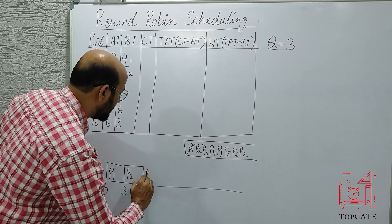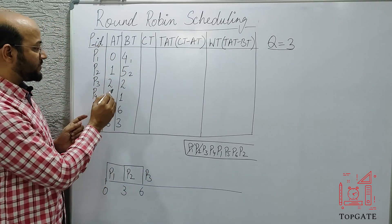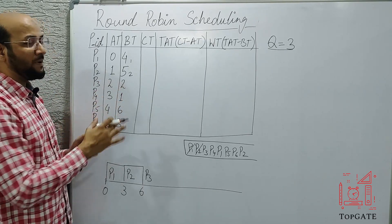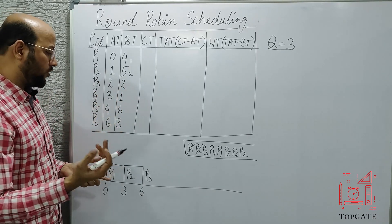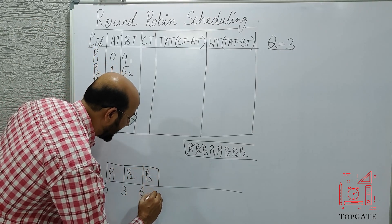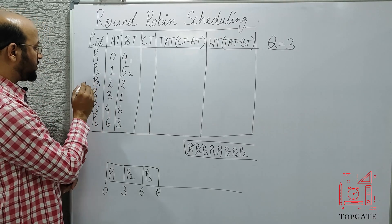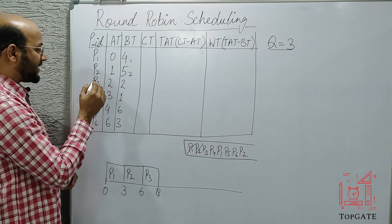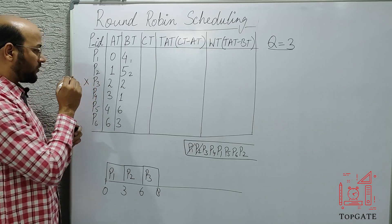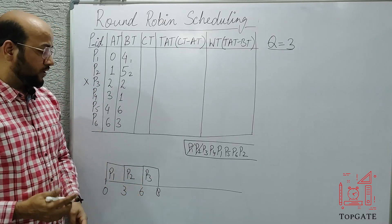Now at the head of the ready queue we have P3. P3's requirement is only two — even though the quantum is three, its requirement is only two. So P3 starts at six and ends at eight. P3 has completed its work; it is terminated and goes out of the system. There is no P3 now, and we are at time eight.